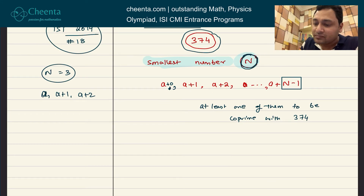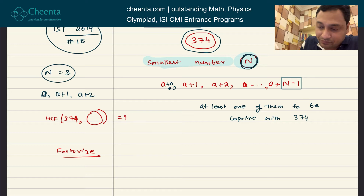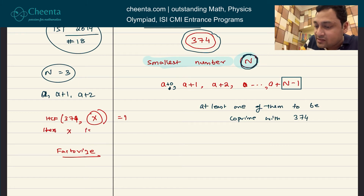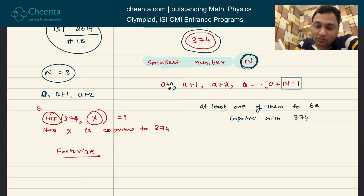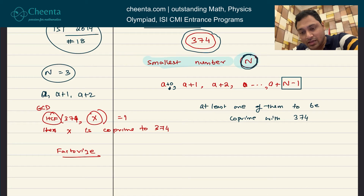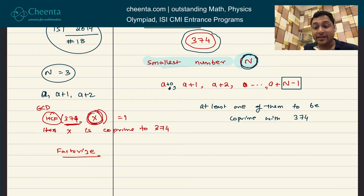Let's start some analysis. In these sorts of problems, the main idea is to factorize the number. By the way, if you don't know what coprime means: HCF of 374 with some number x equals 1, then we say x is coprime to 374. If you're not familiar with HCF, it's often called GCD — the greatest common divisor between 374 and x is 1, meaning no prime number divides both 374 and x.